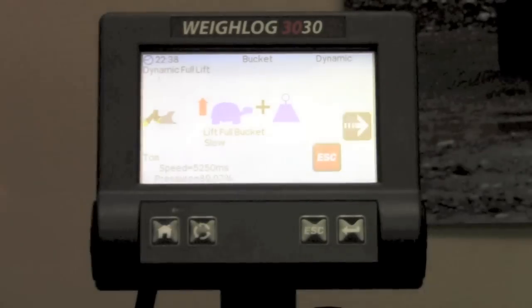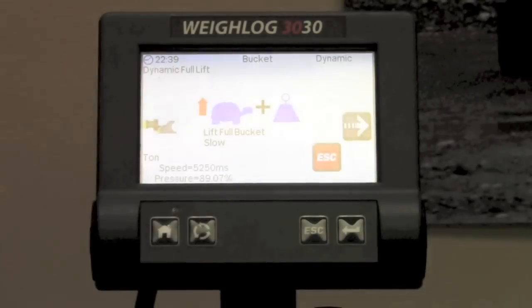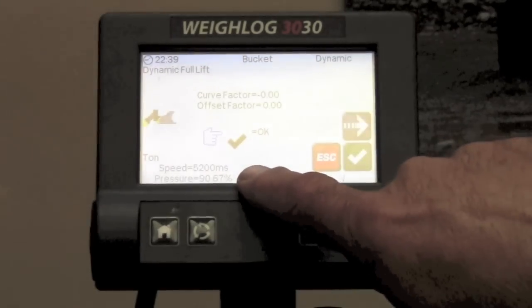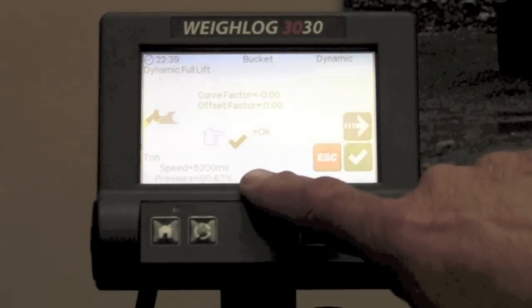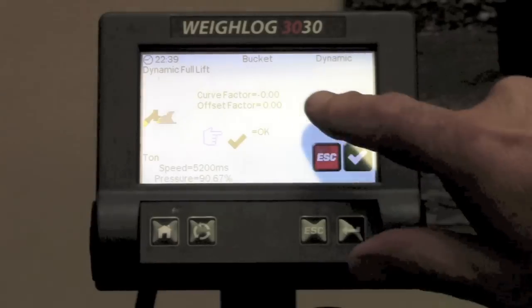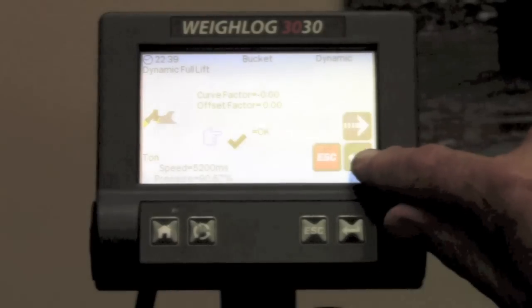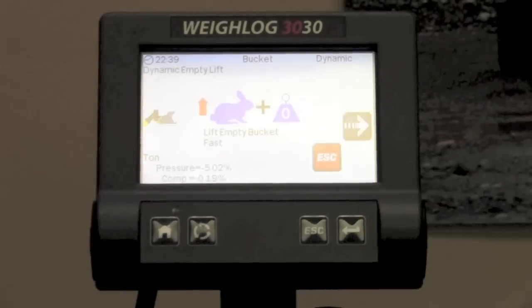We pressed the check key and now it asks us for the slow lift. At this point we would be running the loader near idle and we would lift again. Notice that the speed here in milliseconds is longer. The pressure is roughly the same and it has set the curve and offset factor for us.